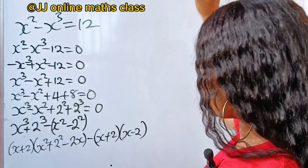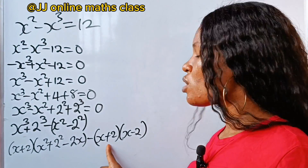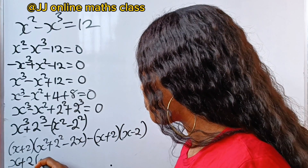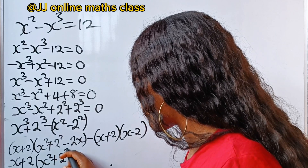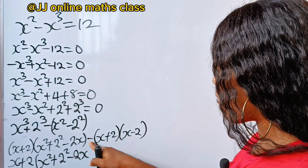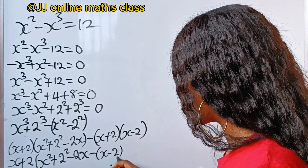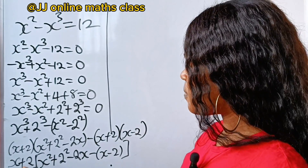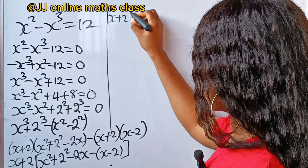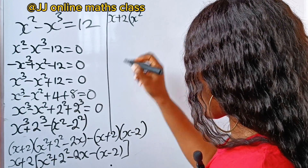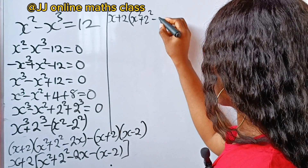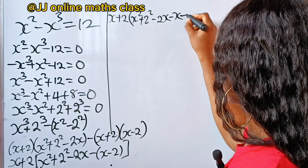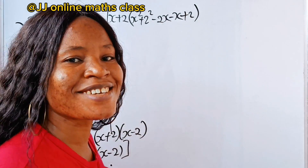Notice that we have x plus 2 here, and x plus 2 again, so we can factorize it out. If we factorize x plus 2 out, we are going to have x squared plus 2 squared minus 2x, then minus x minus 2. Opening those brackets: minus times x gives us minus x, and minus times minus 2 gives us plus 2. So we have x plus 2 times x squared minus 3x plus 6.